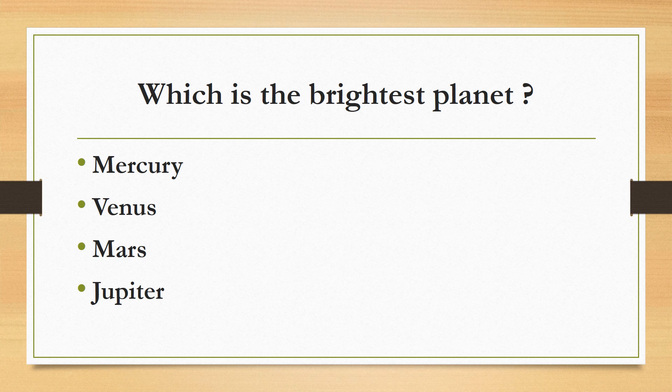Which is the brightest planet? Mercury, Venus, Mars, or Jupiter? The correct answer is Venus. Venus is the brightest and hottest planet in the solar system, also known as the morning or evening star, and the twin sister of Earth. Mercury is the nearest and smallest planet to the sun. Mars is called the red planet. Jupiter is the largest planet in the solar system.